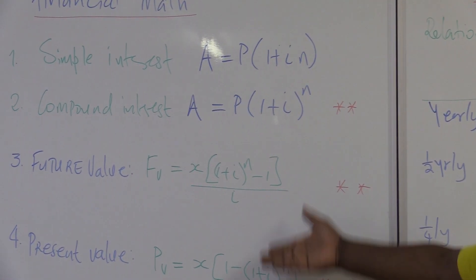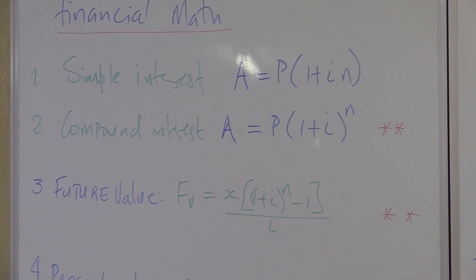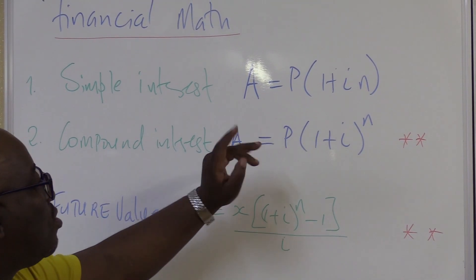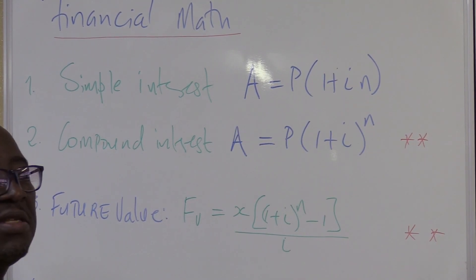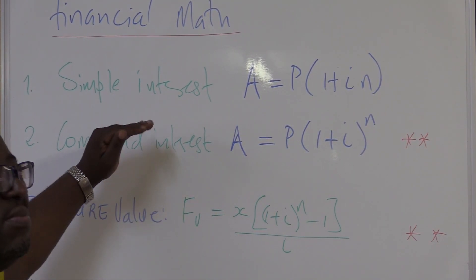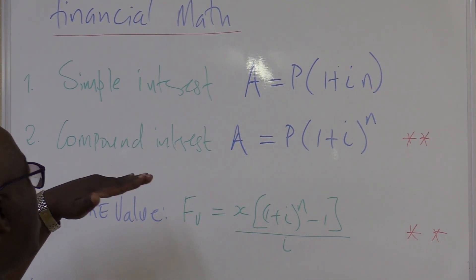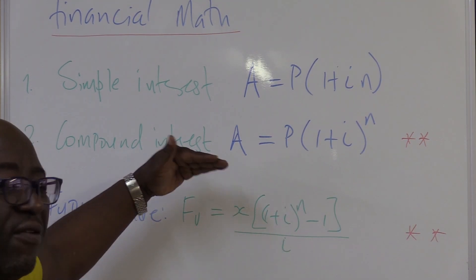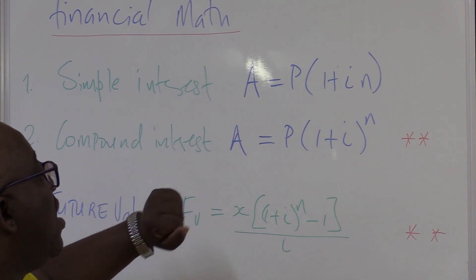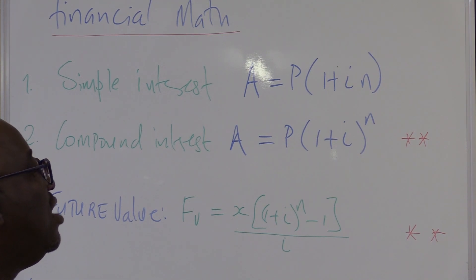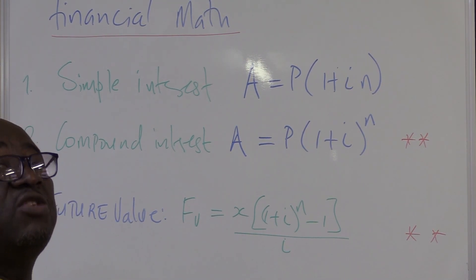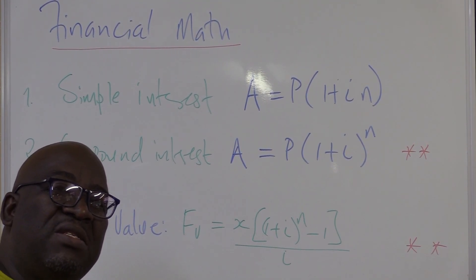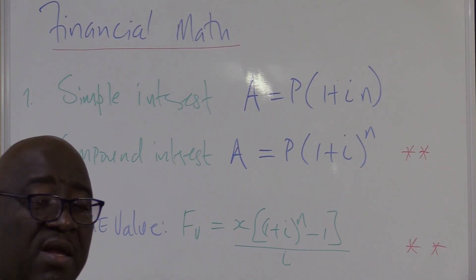Four of those formulae are given in your formula sheet. The first one is called simple interest: A = P(1 + i·n). The next one is called compound interest — you will definitely find this in your final exam: A = P(1 + i)^n. These are real-life lessons. If you master this, you can manage your finances better in real life.